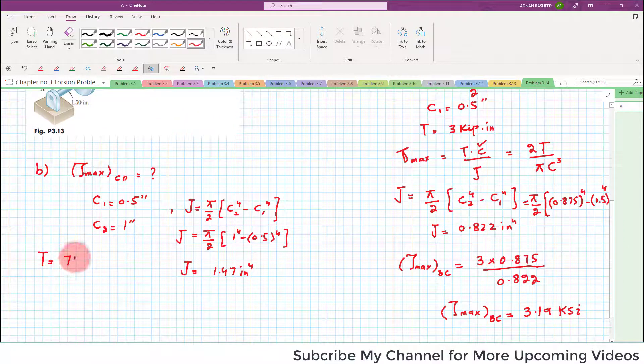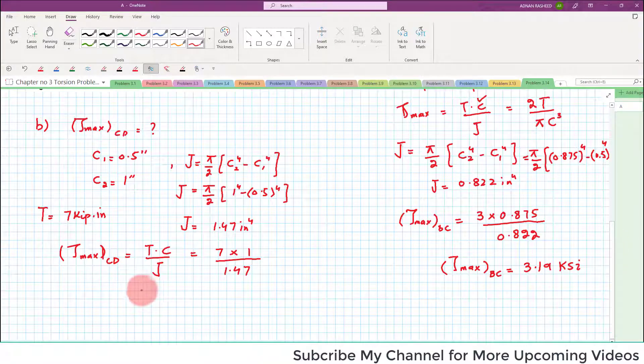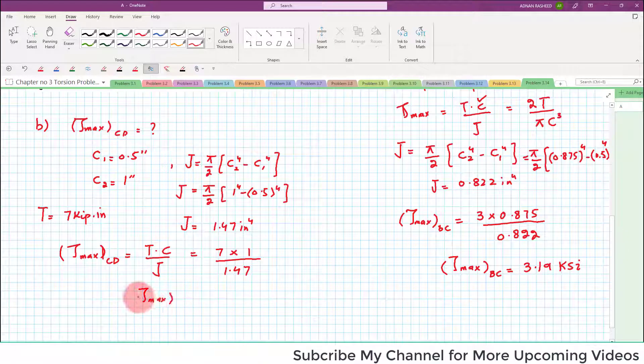So put the value in maximum shearing stress in shaft CD which is equal to T into C divided by J. Again T is equal to 7 kips, C is equal to 1 inch maximum which is C2 here, and J is 1.47. So when you calculate this Tom X in shaft CD comes out to be 4.75 ksi. This is the part B.